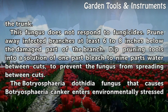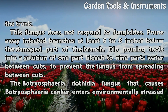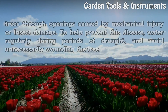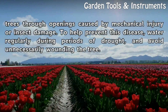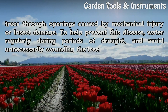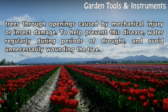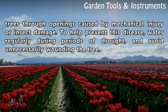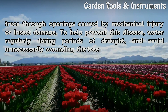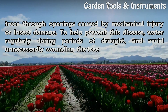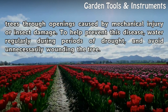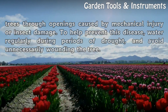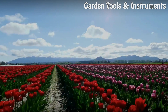The Botryosphaeria dothidea fungus that causes Botryosphaeria canker enters environmentally stressed trees through openings caused by mechanical injury or insect damage. To help prevent this disease, water regularly during periods of drought, and avoid unnecessarily wounding the tree.